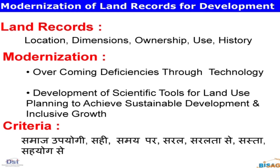Three things — location, use and ownership — decide the market, decide the purpose, and also decide whether you can or cannot do something. In modernization, if you see the overcoming of inefficiencies: today, land boundaries are decided by a pillar. If we instead define them by longitude and latitude and publish on the web, then everyone can visualize everything on the net over the earth. That is modernization.